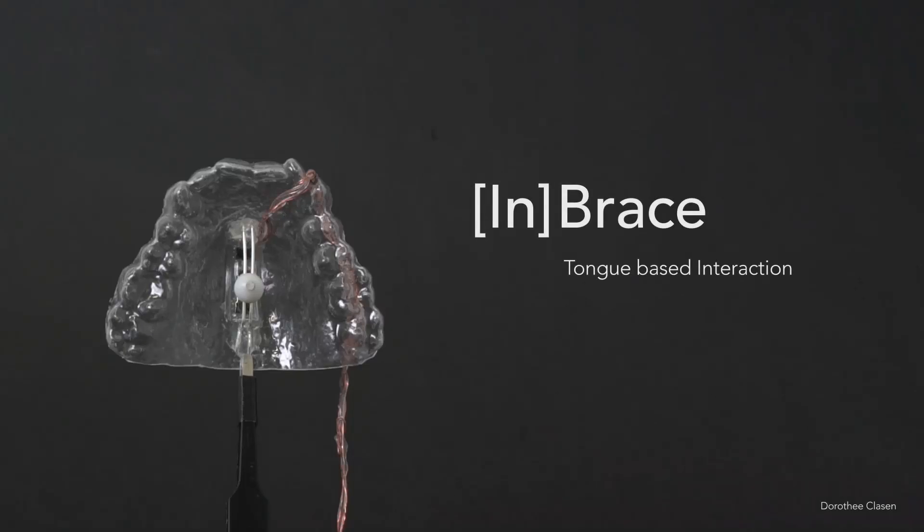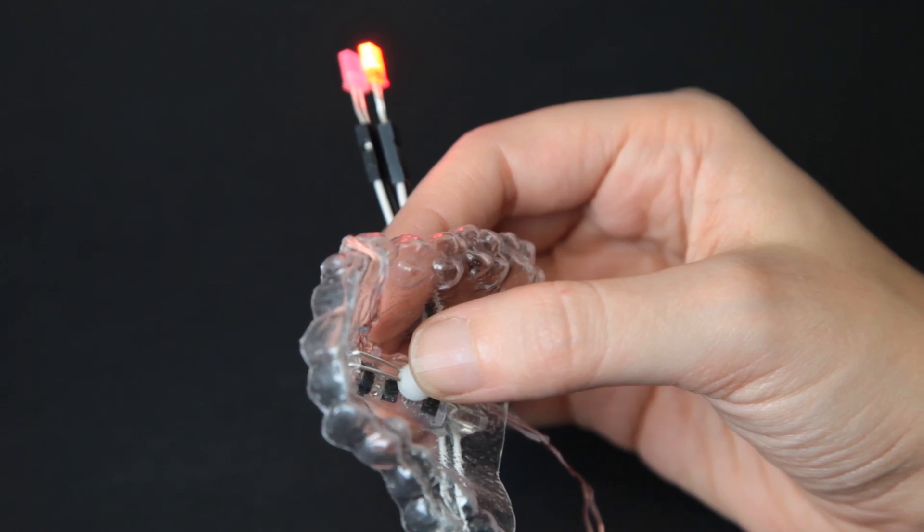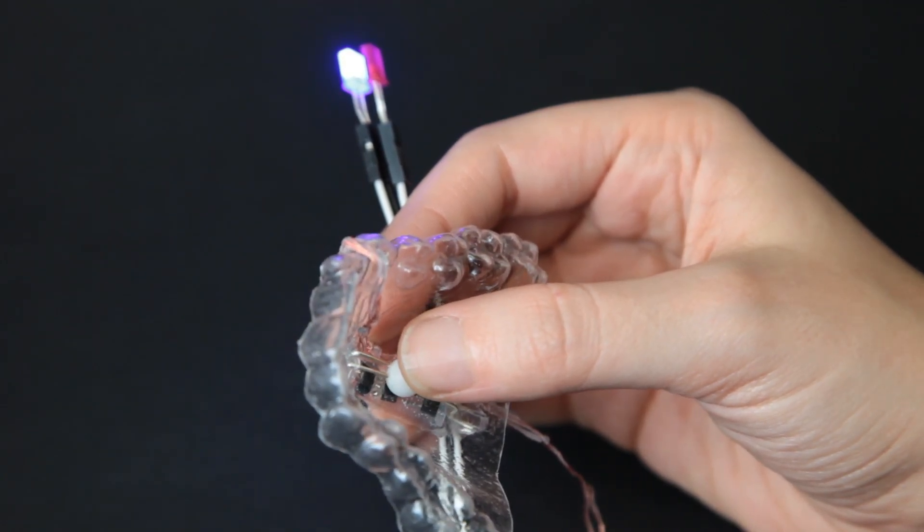InBrace is a device that allows a tongue-based interaction between human and machines. By moving a magnetic element back and forward, the user can give an input.